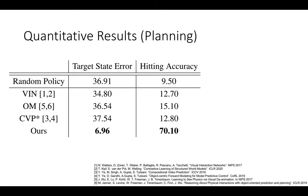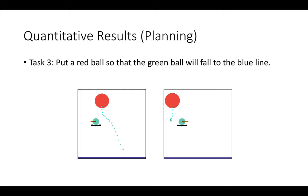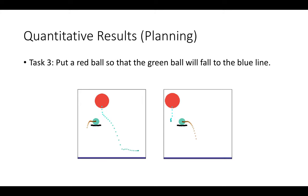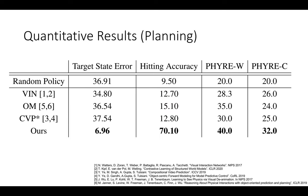In both planning tasks, our method significantly outperforms previous methods. In the hitting case, we achieve a 70% success rate while other methods only achieve around 10%. This is because our model can model long-term interaction and considers context information. We also apply our model on the PHYRE dataset for planning, where we determine where to place the red ball and what size it should be so the green ball touches the blue bar. We evaluate across seven different environments.